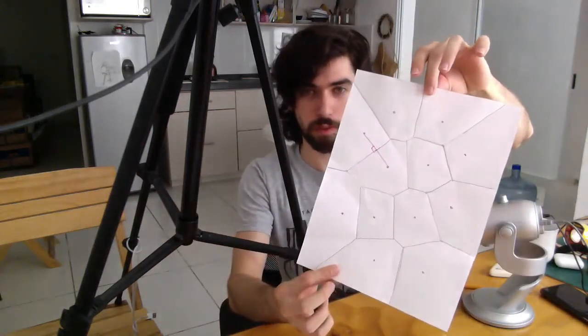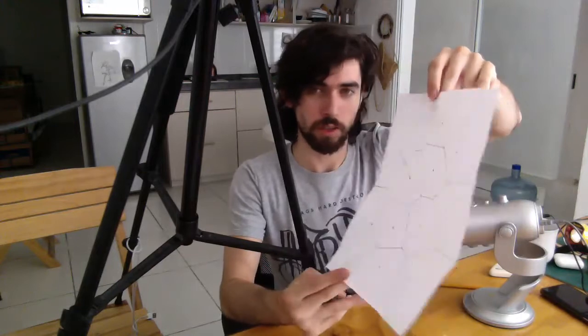These are called Voronoi cells, a very interesting mathematical object. The method we're going to be using to approach them is actually quite interesting, with all the mountains and valleys on the backside.